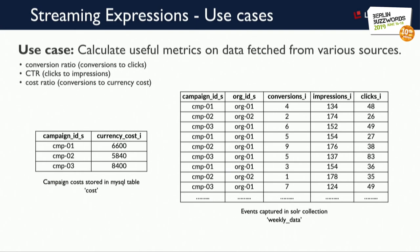Now let's make it more complex. We have two kinds of data — one dynamic, one static — at two different locations. On the right-hand side, we have organizations that have adopted certain campaigns, with metrics in weekly format: for Organization 1, Campaign 1, we have 134 impressions, 48 clicks, and 4 order conversions. On the left-hand side, we have static data in a MySQL table representing the cost incurred by each organization: Campaign 1 costs 6600 units, Campaign 2 costs 5840 units, and so on.